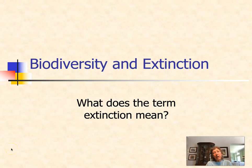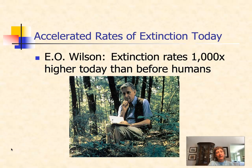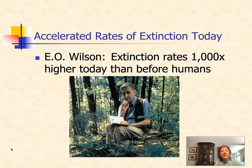I'd like to talk to you a little bit about biodiversity and extinction. Most of us know what the term extinction means — species are gone forever. The dinosaurs are extinct; they'll never be on the planet again. And a number of us also realize that we're experiencing very high rates of extinction today.